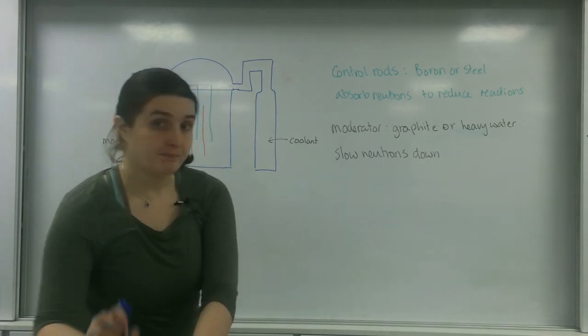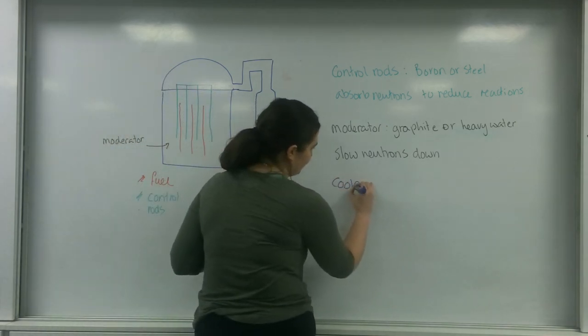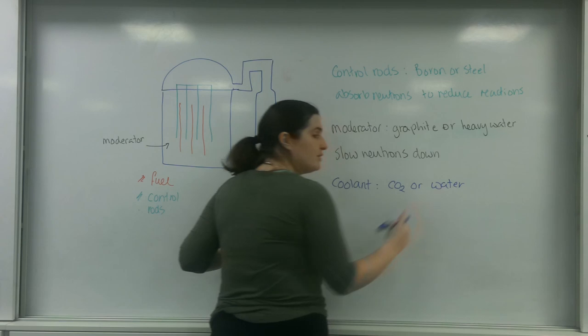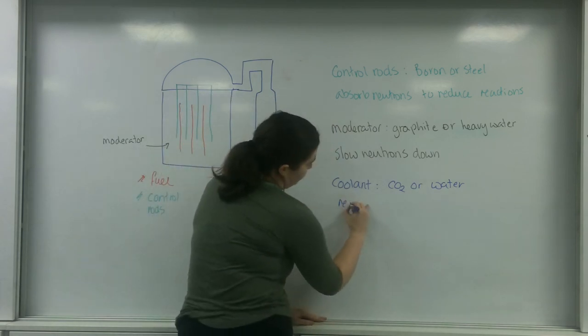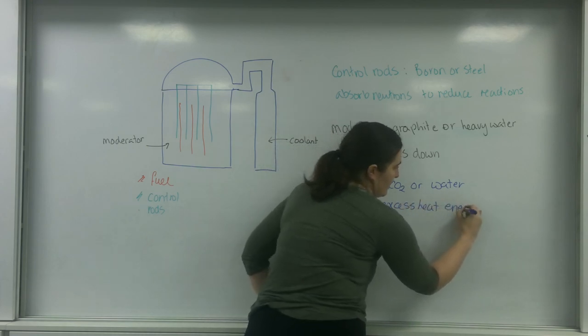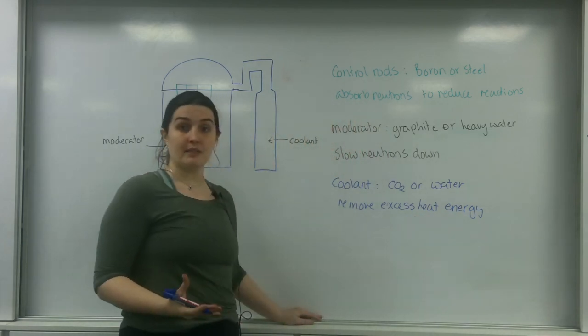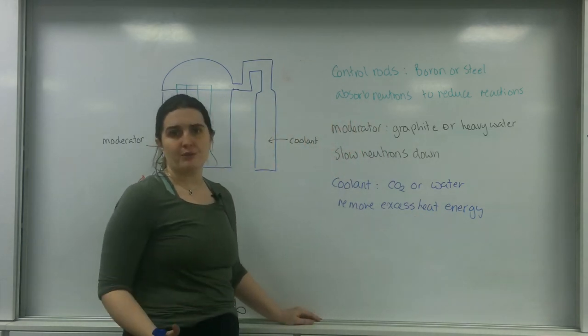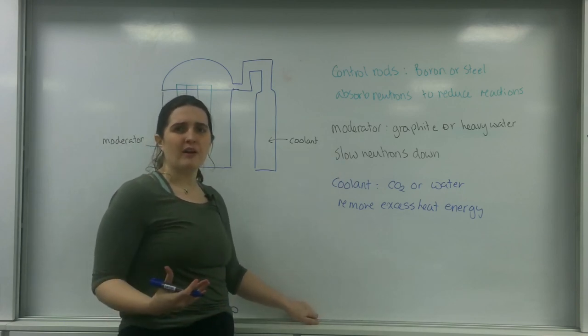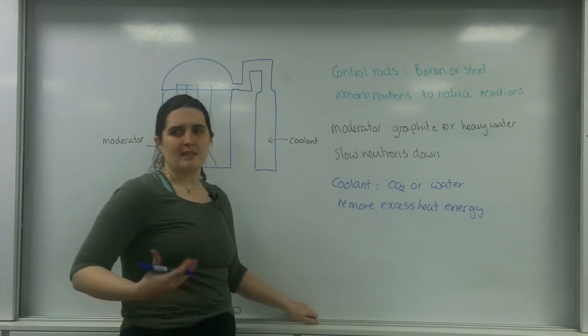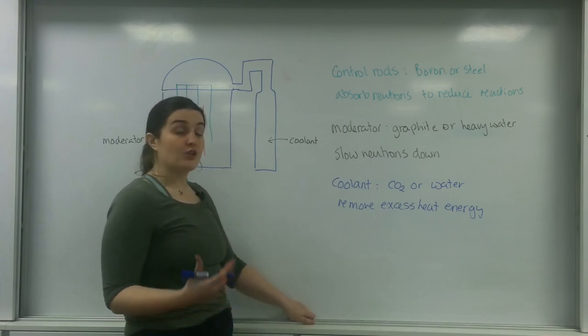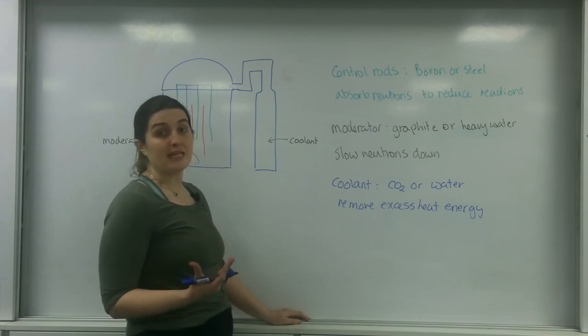Now the coolant, it does exactly what it says on the tin. It can be CO2 or water and what this is going to do is remove excess energy. It's going to remove excess heat energy from the system. If you remove energy from the system, much like what the moderator is doing, you can reduce the amount of reactions, but the more important part is that you do not want the whole reactor to melt. So you reduce the heat energy that's being given off by the reaction and control it so you're not melting and causing problems with your material.